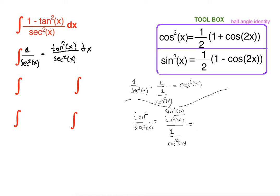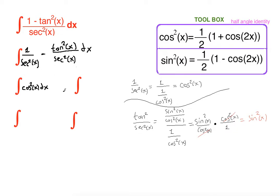So, using keep-change-flip: keep the first fraction, change division to multiplication, and flip the second fraction. The cosine squared terms cancel each other and we get sine squared of x. So we can rewrite 1 over secant squared of x as cosine squared of x, and tangent squared of x over secant squared of x as sine squared of x.